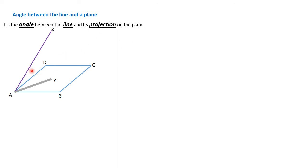Using our previous example, we have the plane ABCD and the line AX. AX projected on ABCD would be the line AY. Therefore, the angle between AX and its shadow AY — that projection of the line AX — is the angle between the line and the plane.